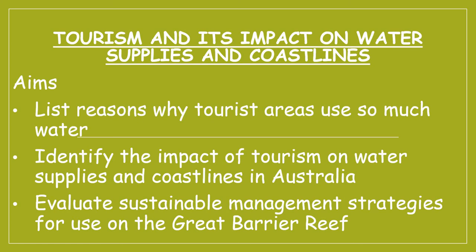Hey everyone, welcome to lesson four of theme eight GCSE geography. We're going to be looking at tourism and its impact on water supplies and coastlines today, and to do that we're going to use the northeastern area of Australia near the Barrier Reef as a case study around a city called Cairns. Pause the video here to write down today's title so we can get started.